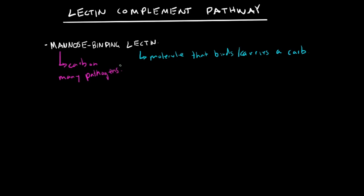So one important thing to note for the mannose binding lectin is MBL. So MBL does not bind carbs on healthy human cells and tissues.